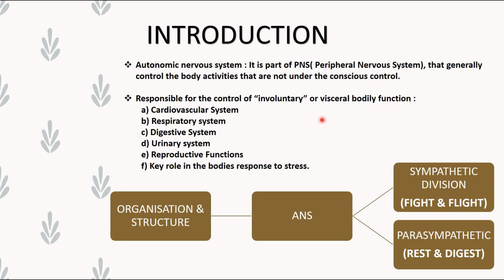The ANS functions on the cardiovascular system, respiratory system, digestive system, urinary system, reproductive system, and plays a role in the body's responses to stress. The organization and structure of ANS is broadly divided into two types: sympathetic, that is fight and flight, and parasympathetic, that is rest and digest.